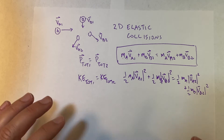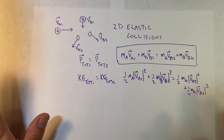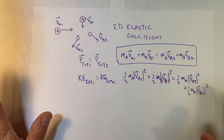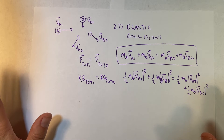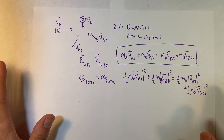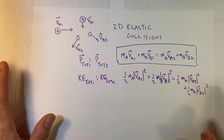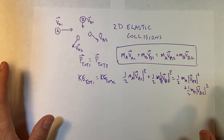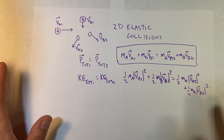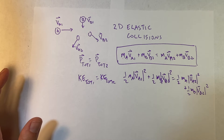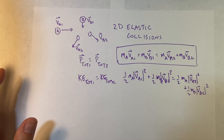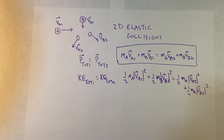Things get really crazy because you start having these vectors with squared terms — it's really really messy and I don't want to do it. But I do want to look at two-dimensional collisions, so instead let's build a numerical model for a two-dimensional collision.